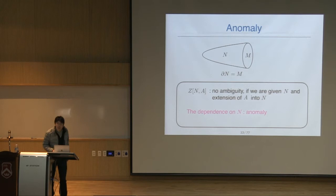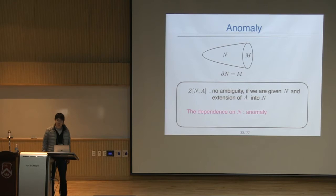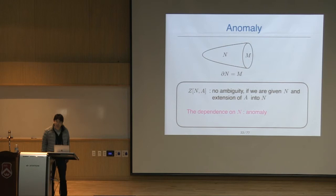A question about orientability: in the most general case, I don't assume orientability. For example, M-theory can be defined on non-orientable manifolds such as the Klein bottle. In the standard model of particle physics in four dimensions, the manifold must be orientable. But in more general cases, we don't need to assume that — M-theory can be formulated on non-orientable manifolds. Also, N is not unique, and that is important — I will later discuss that point.